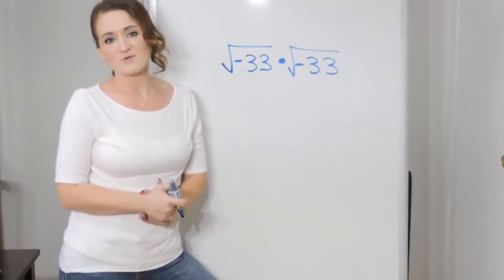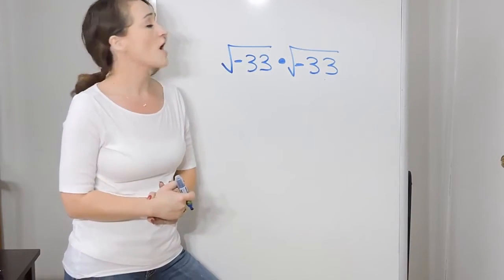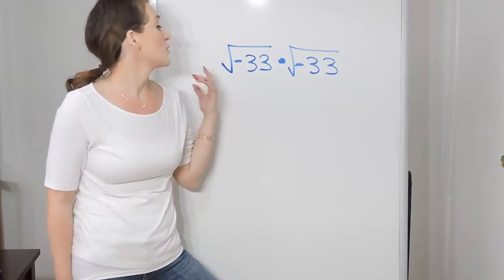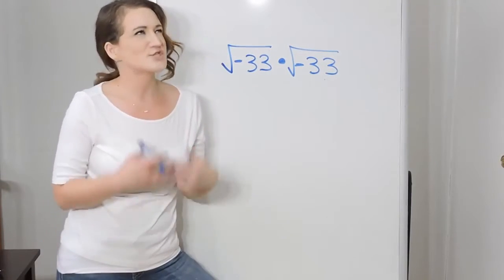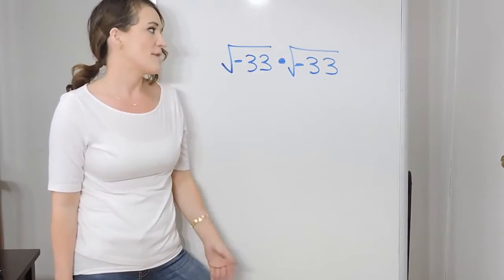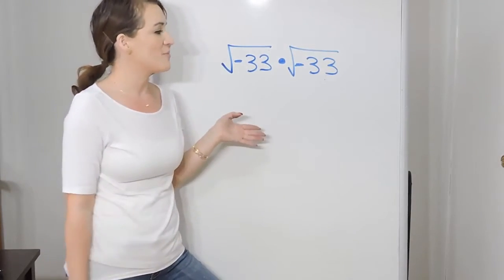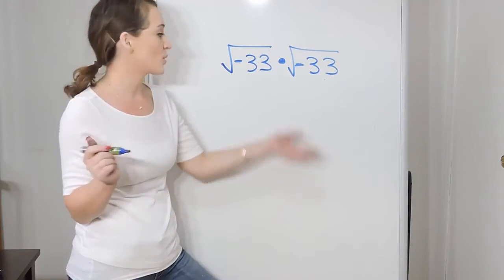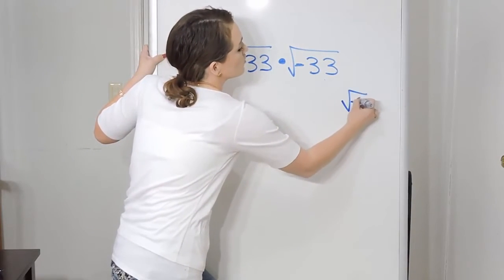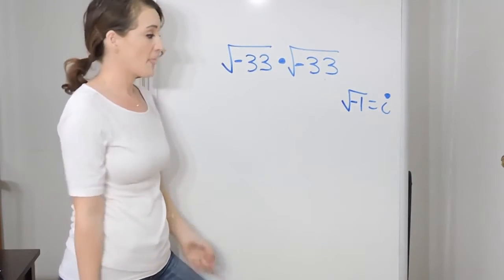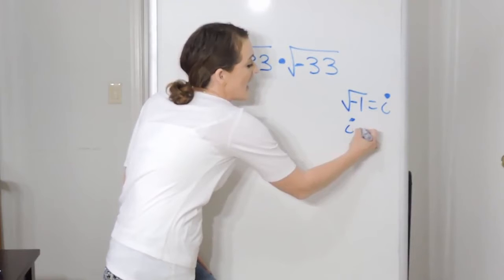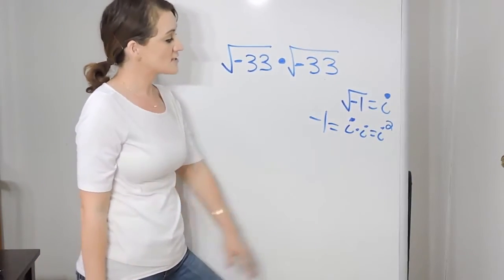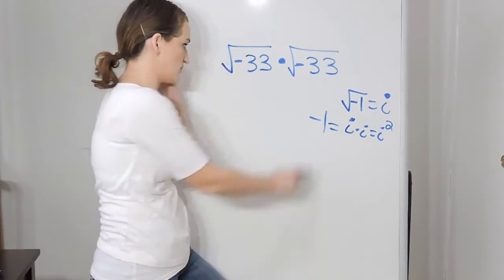Complex numbers come into play whenever you're taking the root of a negative number. Up until this point, we've been told we can't take the square root of something that's negative — it's not possible, we get a no solution. But now they're going to come into play. When dealing with complex numbers — those are the i's — there are two important rules. First, the square root of negative one is equal to i. Second, i times i, or i squared, is equal to negative one. These are two important rules we definitely need to know.